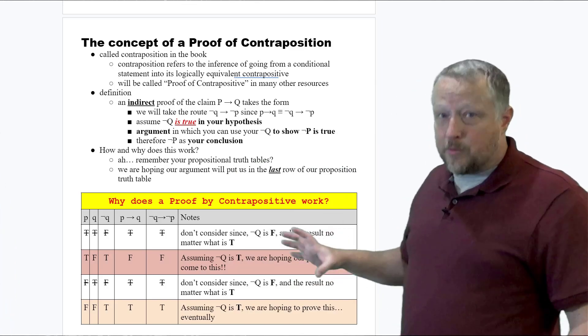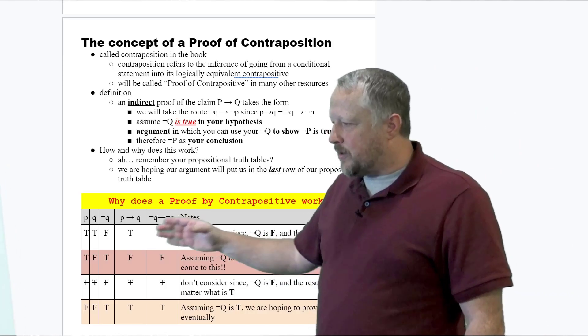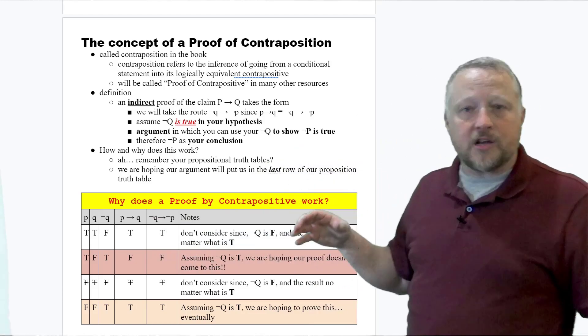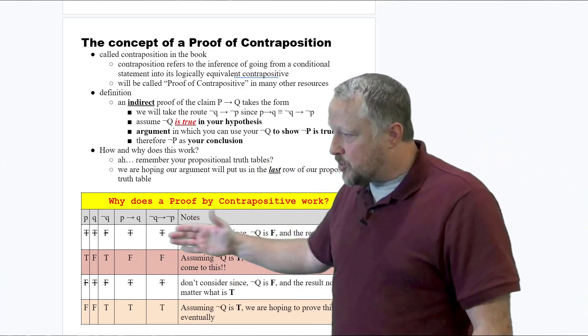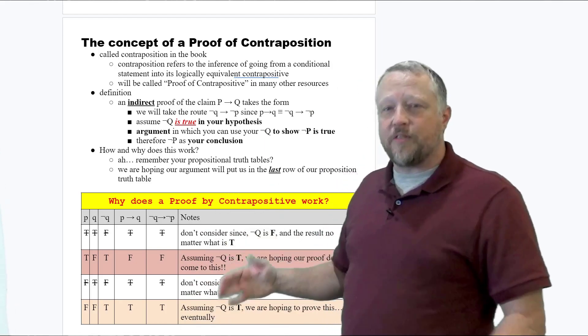First of all, in our table, which you're very familiar with here, I'm going to focus on the P implies Q and the not Q implies not P. That is our contrapositive that we talked about before. Notice they line up exactly as they should, because they are equivalent when it comes to results.